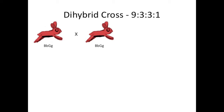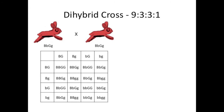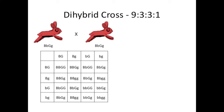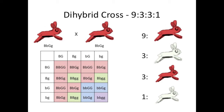Now we have the dihybrid cross, which is when stuff finally starts to get interesting. These bunnies aren't just red and white — they can be either giant or normal sized as well, with giant being dominant. These two giant red bunnies are dihybrids; they are heterozygous for both color and size. When you cross them together, you get a classic 9 to 3 to 3 to 1 phenotype ratio. Nine will be red and giant, three will be white and giant, three will be red and normal sized, while one will be white and normal sized.